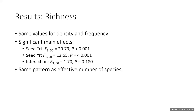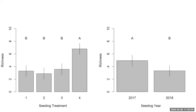For richness, both the frequency and density methods give the same answer. We again saw significant main effects, showing a very similar pattern as total diversity. Treatment four is higher than all other seeding treatments, and 2017 had higher richness than 2018.